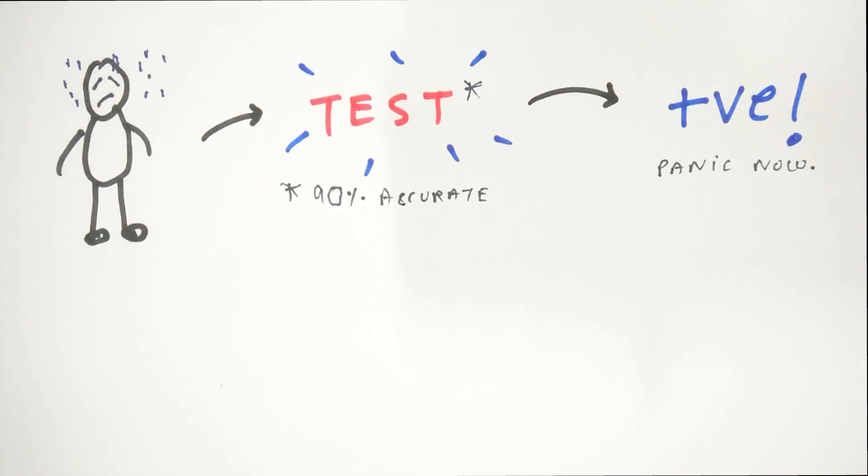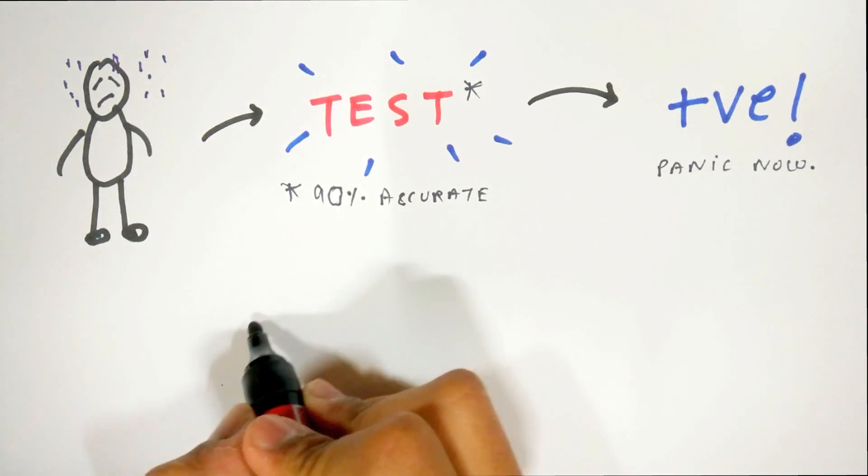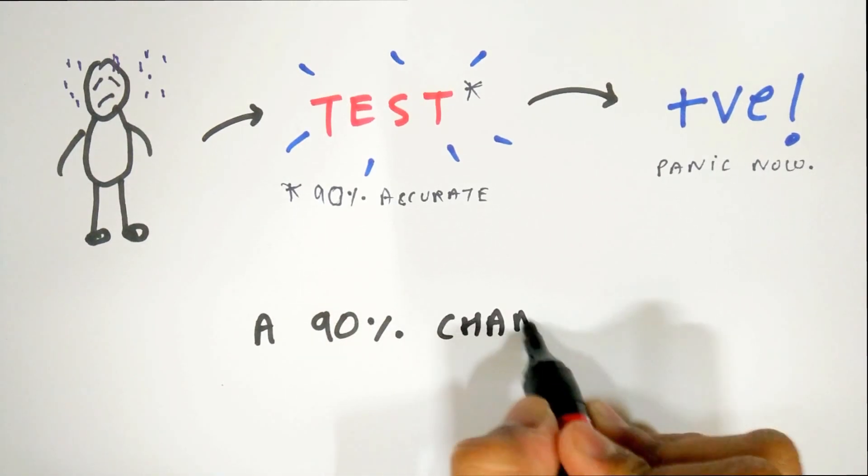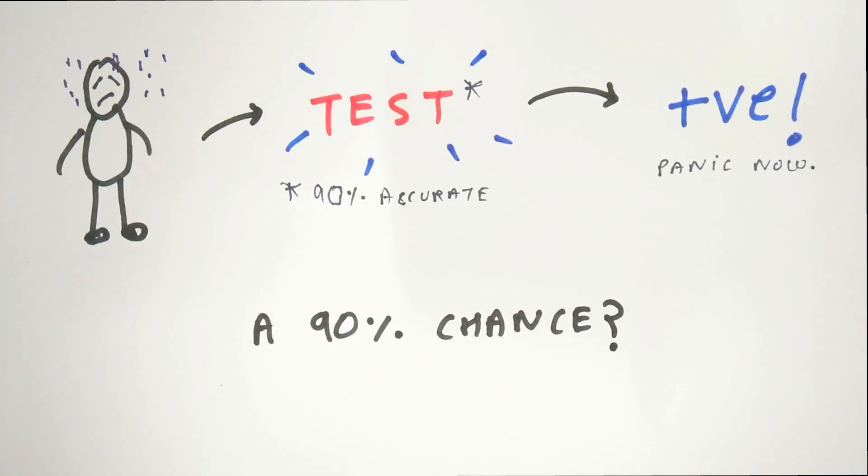The intuitive answer to this is that the probability of you having the disease after testing positive is 90% because the test is 90% accurate. But this is wrong.